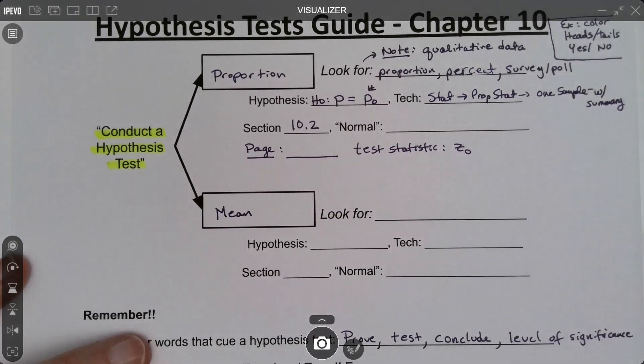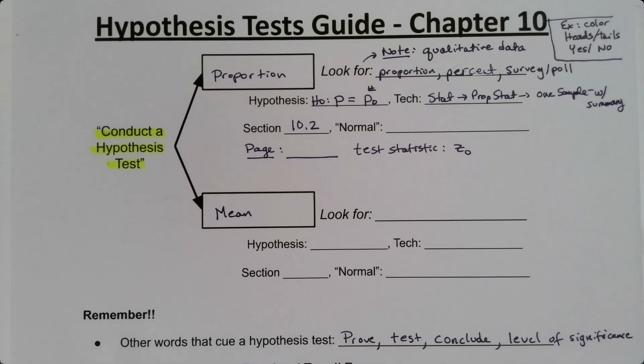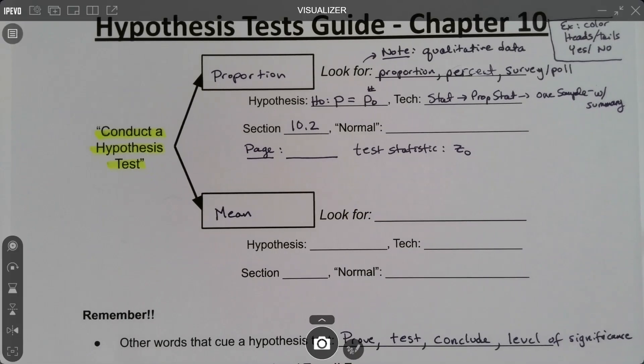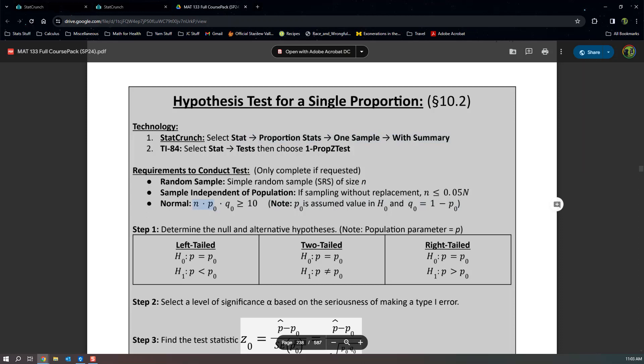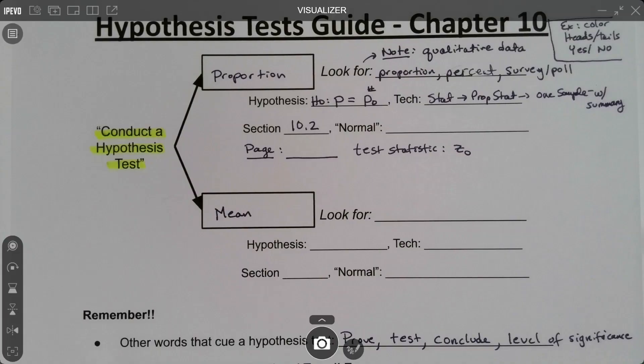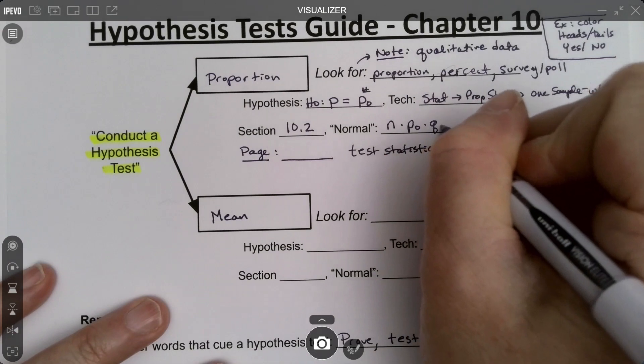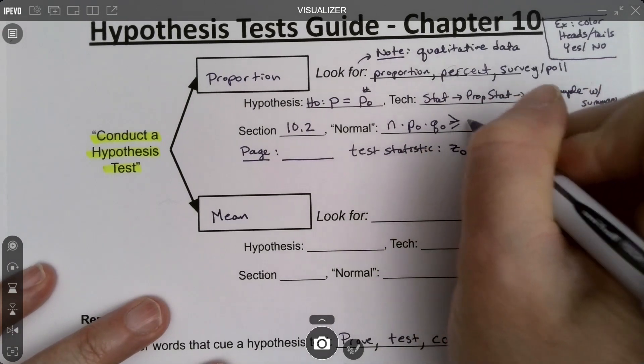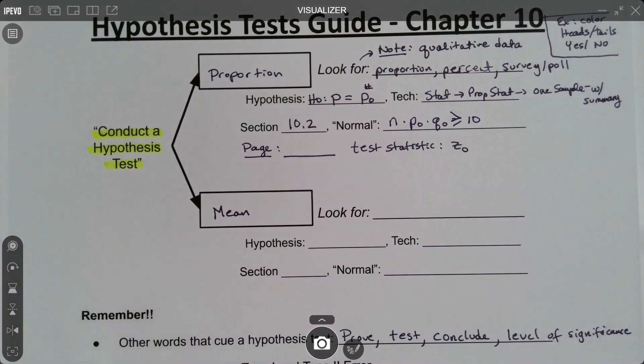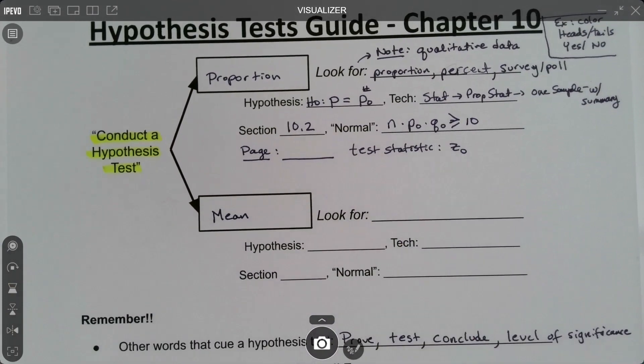Now there's a couple other things. The normal piece—well, normal on these ones is a little different. It's n times p₀ times q₀, where p₀ is the number that we used from the null hypothesis. So that's a little different. n times p₀ times q₀ is greater than or equal to 10. We don't normally use p₀ and q₀, but we do in this instance.